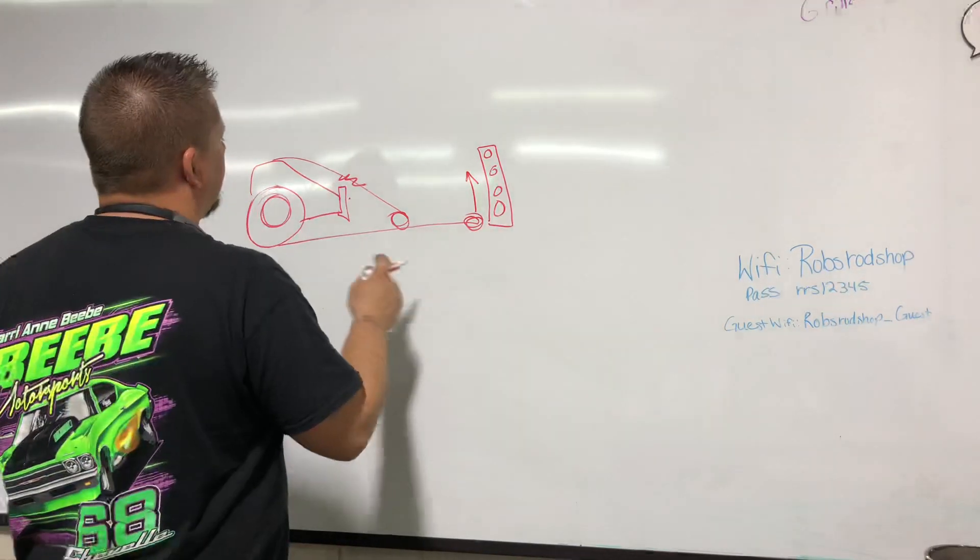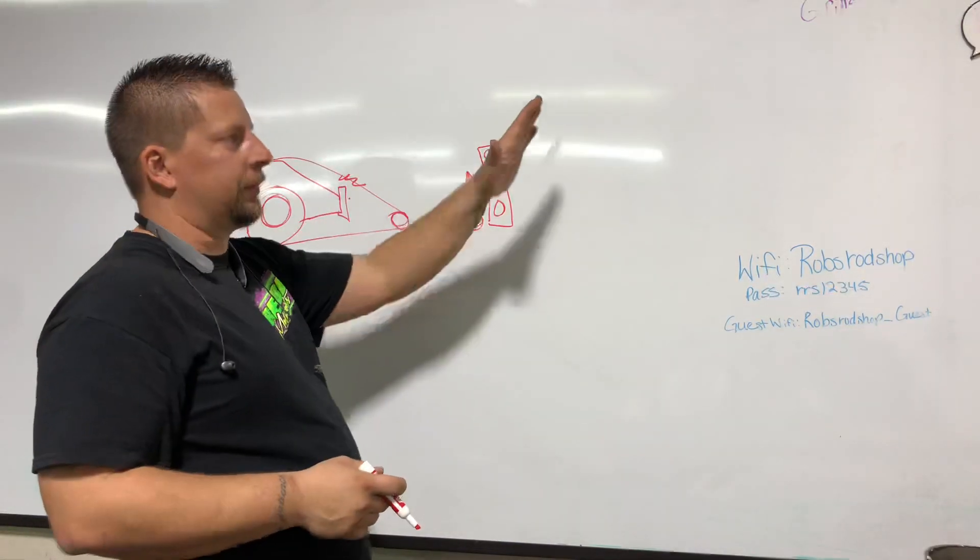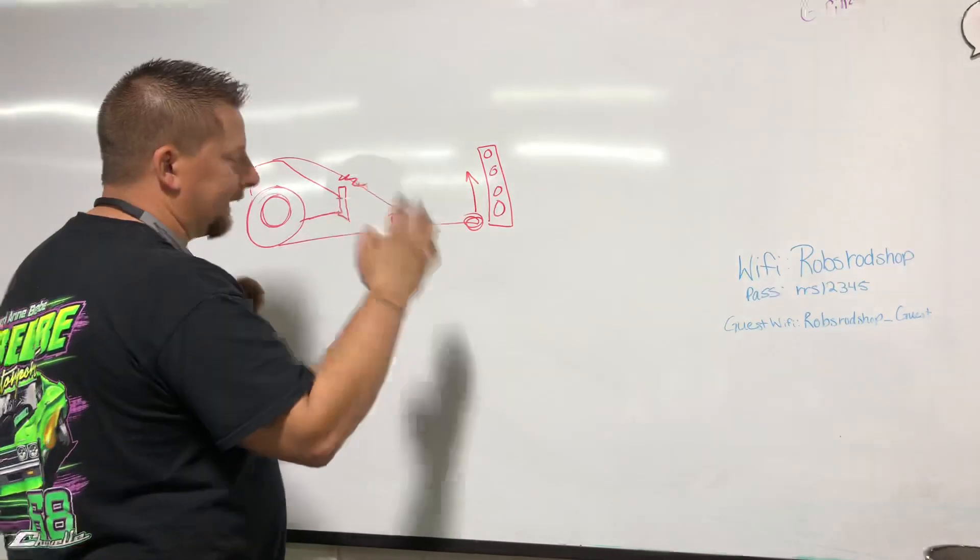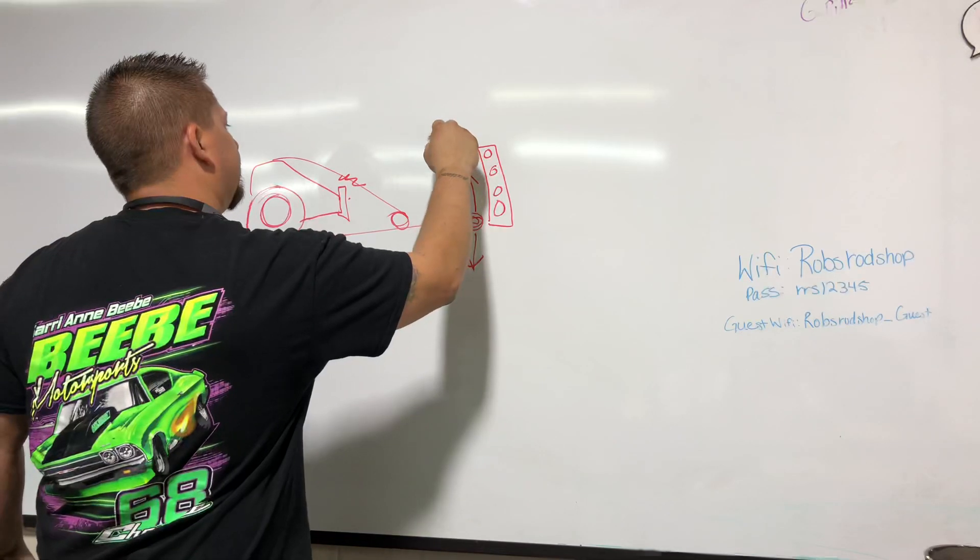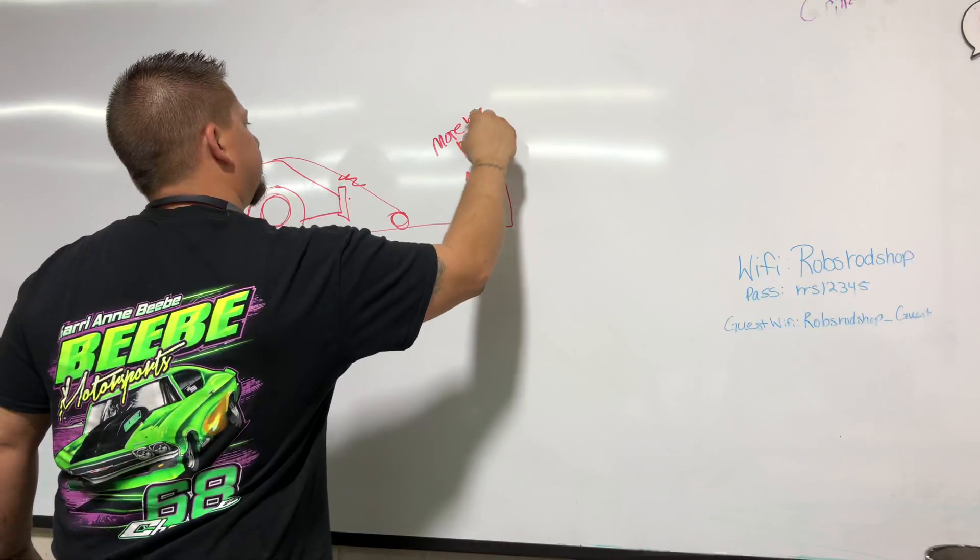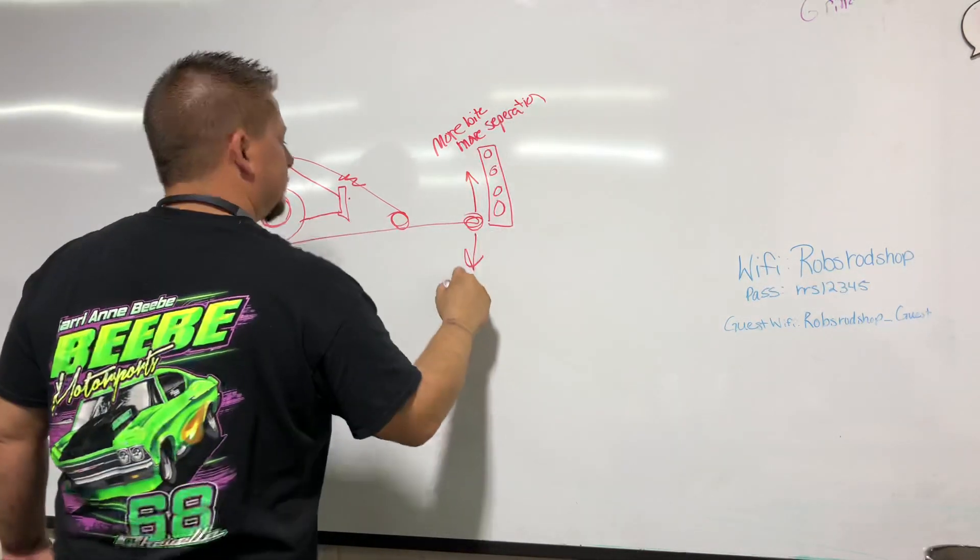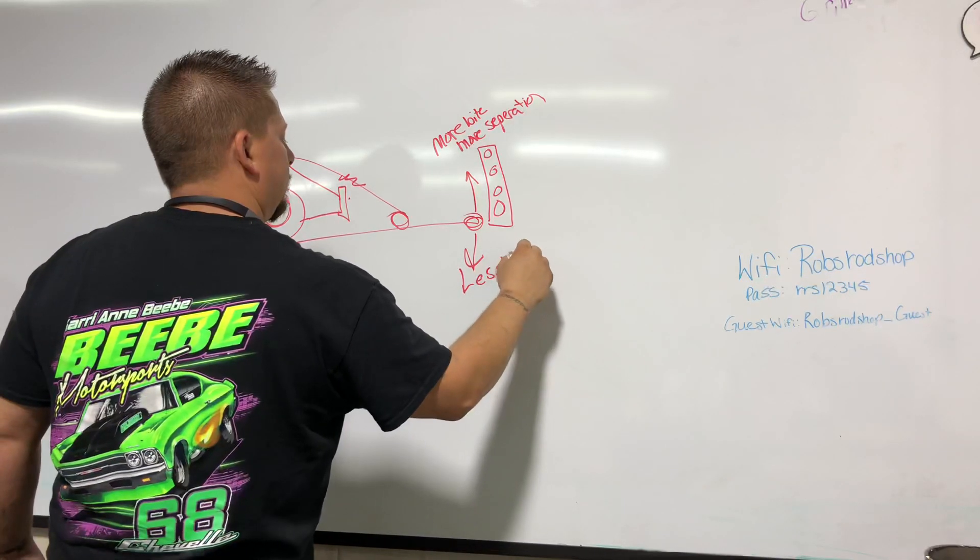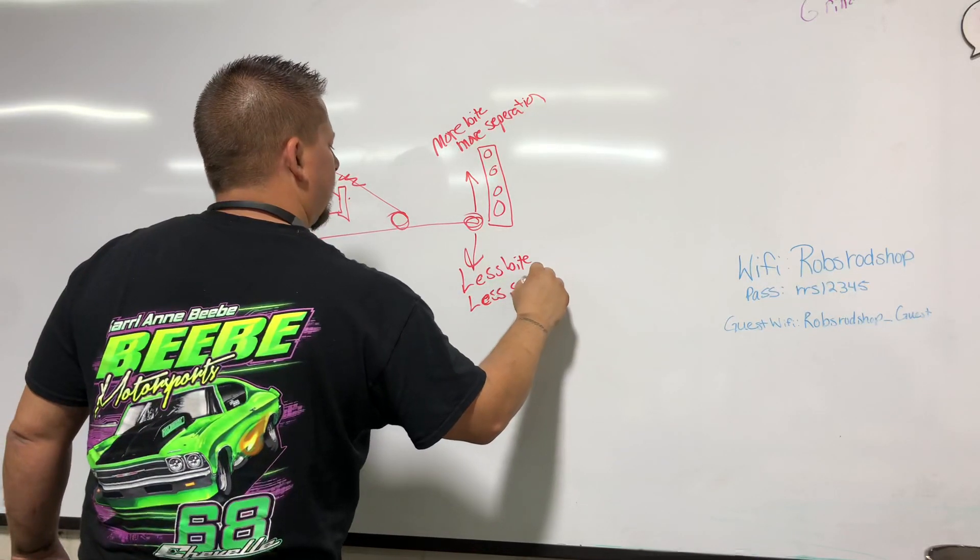But basically this is what it boils down to: if you need more separation, you move the bar up in the car. That's going to give more leverage on the chassis when the tire drives forward. It's going to push up on the chassis and all that good jazz. If you need to have less bite, you need to move it down in the car. That's more bite, more separation, and this is less bite and less separation.